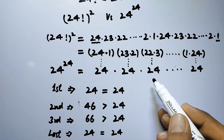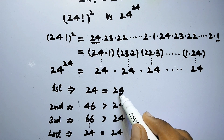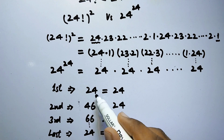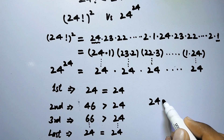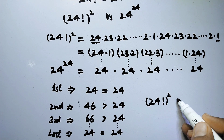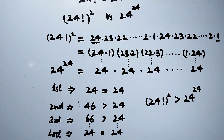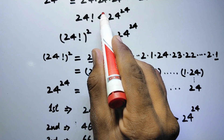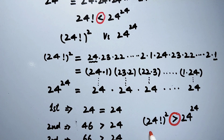Since almost every group from 24 factorial squared is larger than the corresponding value of 24 in 24 to the power 24, the overall product of the first series is larger. Therefore, 24 factorial squared is greater than 24 to the power 24. To summarize: 24 factorial is less than 24 to the power 24, but 24 factorial squared is much greater than 24 to the power 24. That is our final result.